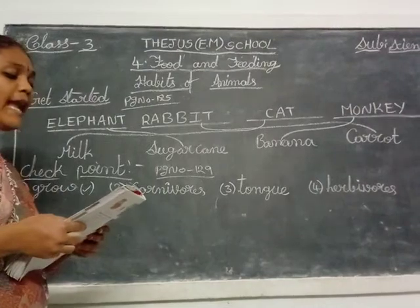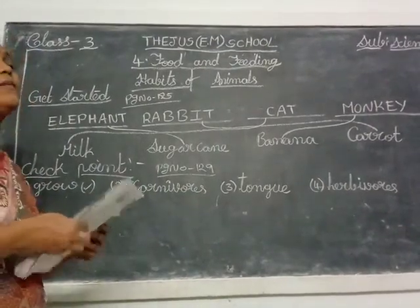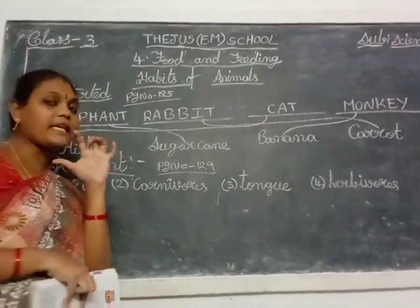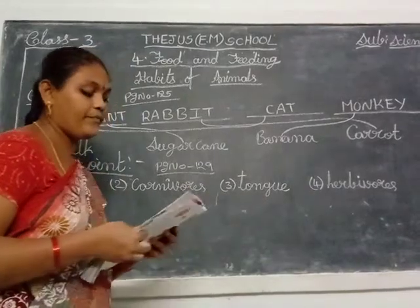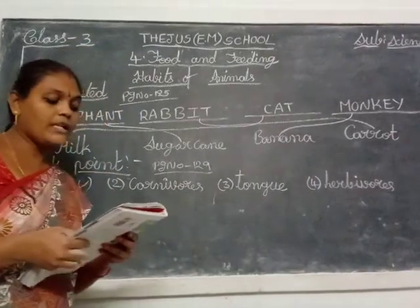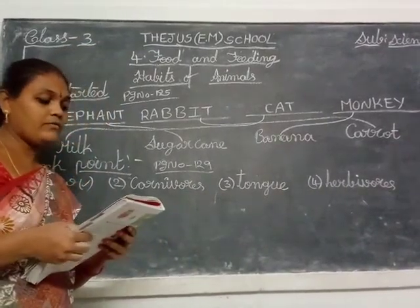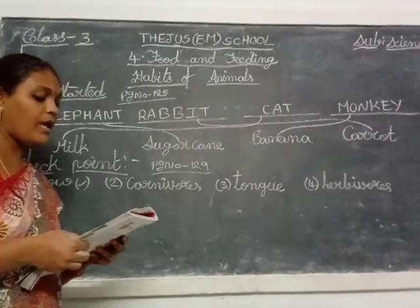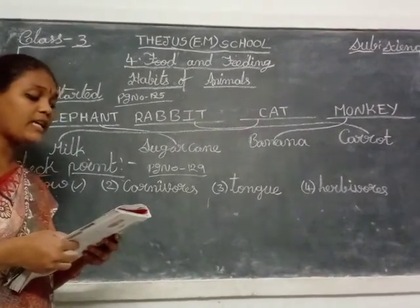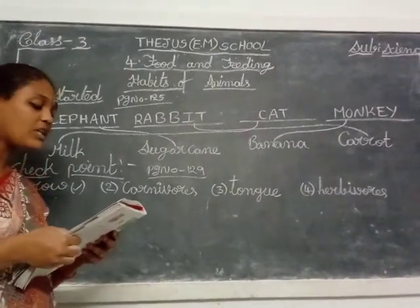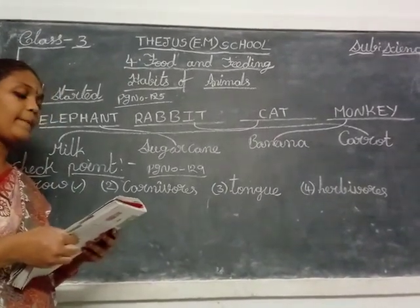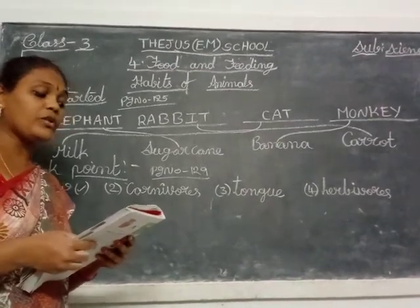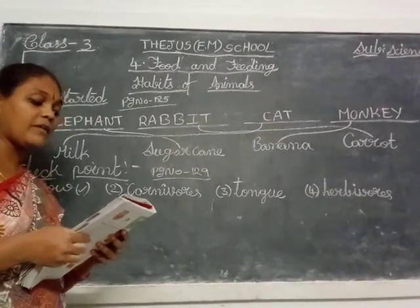A frog has a long and sticky tongue. Animals that chew the cud are mostly herbivores.